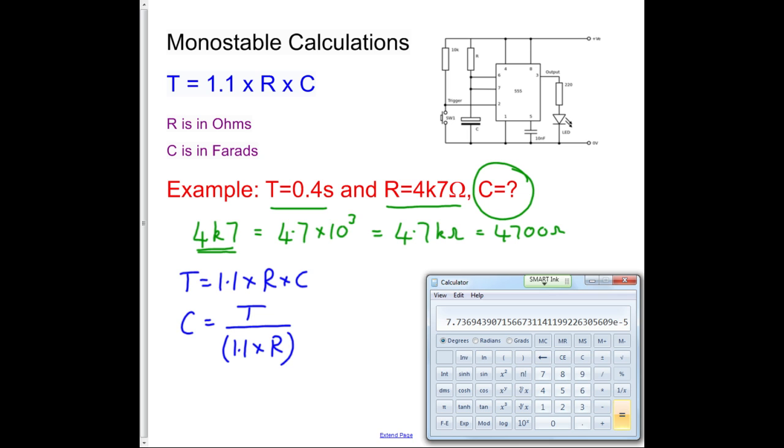And I get an answer which is, again, a very long number. So I'll just write down the first two significant figures, 7.7 times 10 to the minus 5 farads. And we could leave it there, but we don't really talk about capacity in terms of farads. So I would write that as C equals 77 microfarads, because a micro is 10 to the minus 6. And that isn't very close to a standard value, so I'd have to make that from two or three capacitors combined together.